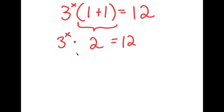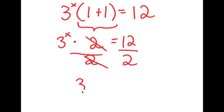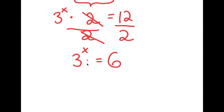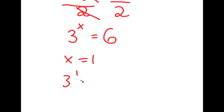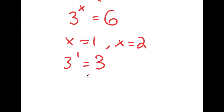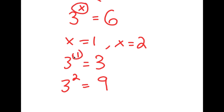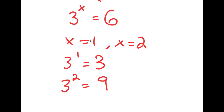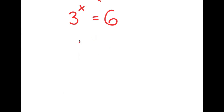So I get 3 to the power of x times 2 is equal to 12. From here, I'm going to divide both sides by 2, so I get 3 to the power of x is equal to 6. Now, if we plug in x equals 1, we get 3 to the power of 1, which is 3. And if we plug in x equals 2, we get 3 squared, which is 9. So the value of x has to be somewhere between 1 and 2, because 6 is between 3 and 9, meaning x is going to be a decimal value.